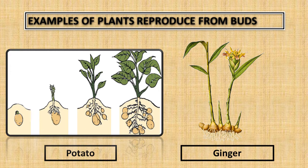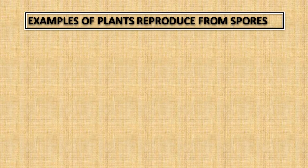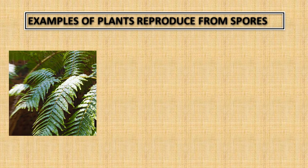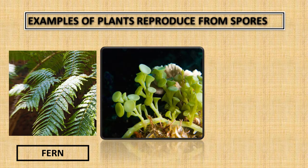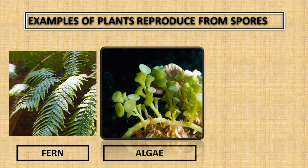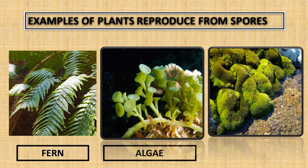Examples of plants that reproduce from spores: ferns, algae, and moss.